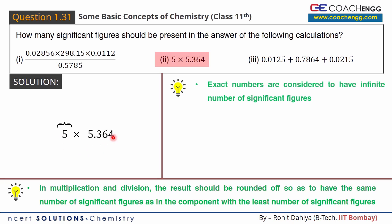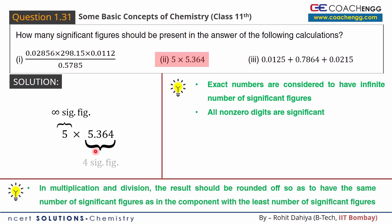The first number is 5, which is an exact number. Exact numbers are considered to have an infinite number of significant figures. For example, if there are 35 students in a class, that is an exact count — it cannot be 34.9 or 35.5 — so it has infinite significant figures. The second number is 5.364, which has 4 non-zero digits, giving 4 significant figures. Comparing infinite and 4, the answer should have 4 significant figures.